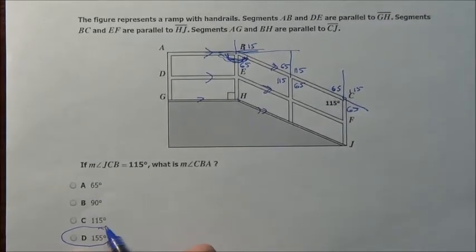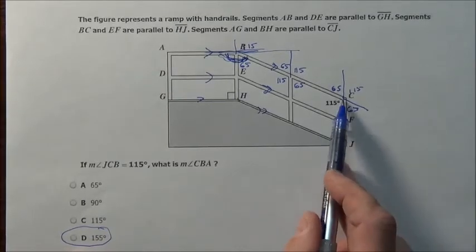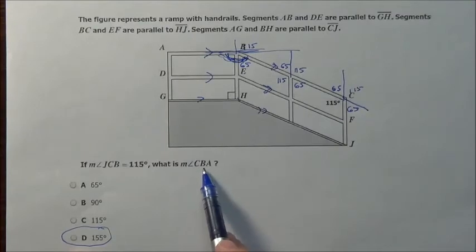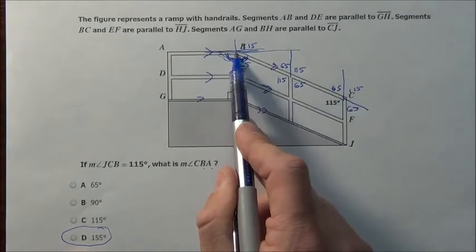None of the other answers make sense - 65°, 90°, 115°? No. It wants the measurement of angle CBA, C to B to A, which basically goes like that.